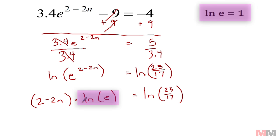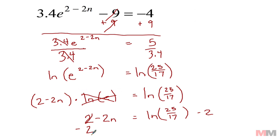And then from here you can use this second property that we learned: the natural log of e equals 1. So this really turns into a 1, and if I multiply 1 to anything it just becomes itself. So 2 minus 2n drops down equals the natural log of 25 over 17.